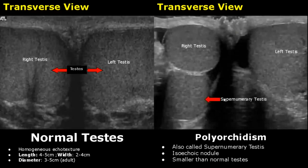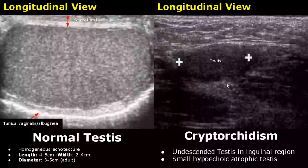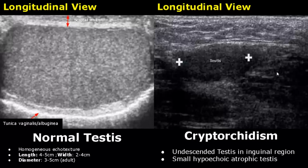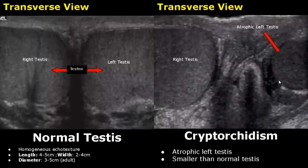Here is another image showing the extra testis behind the right testis. Cryptorchidism refers to absence of testis and also includes undescended, ectopic, or atrophic testis. Here we see a small hypoechoic atrophic undescended testis in the inguinal region. In this transverse view we can see the atrophic left testis, which is smaller and more hypoechoic than the normal right testis.